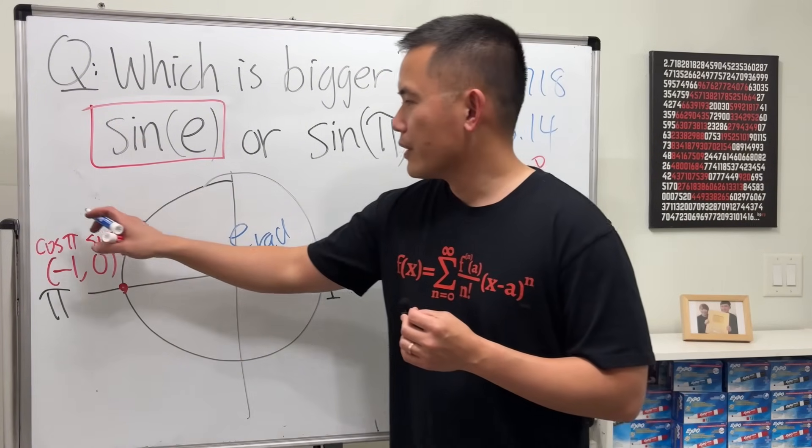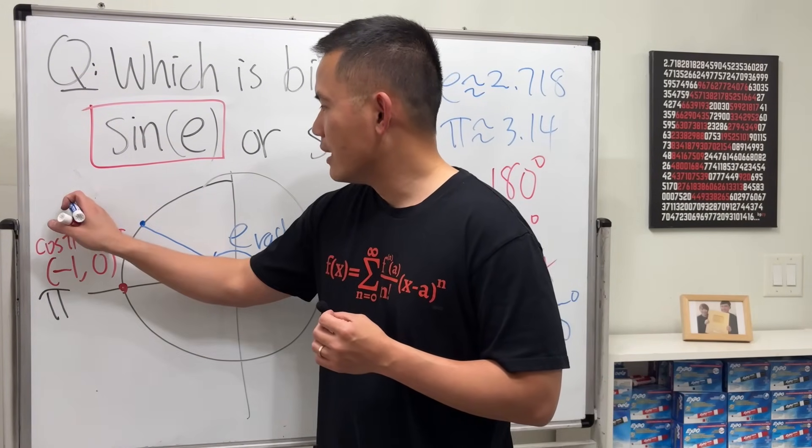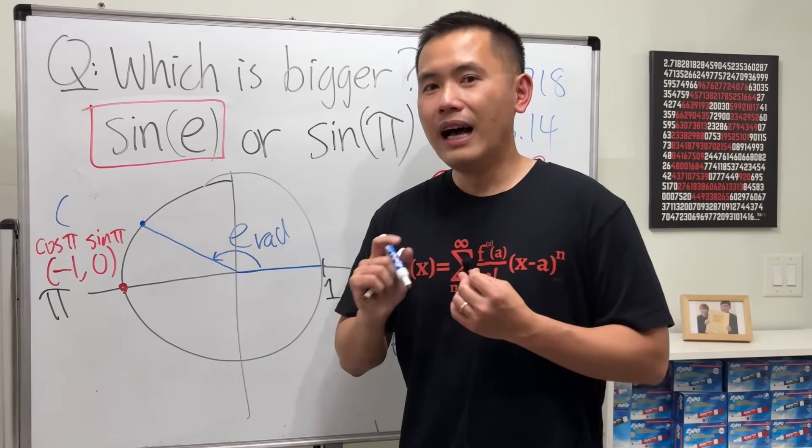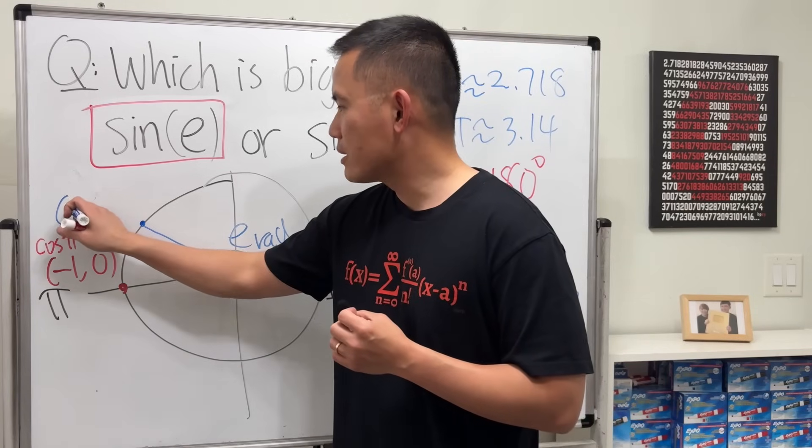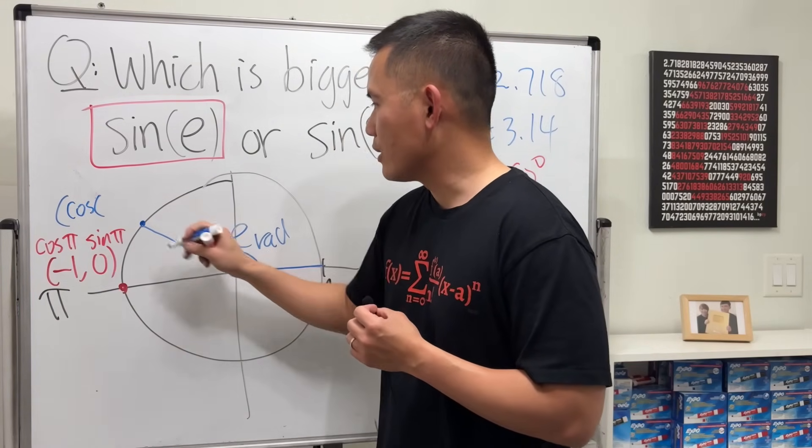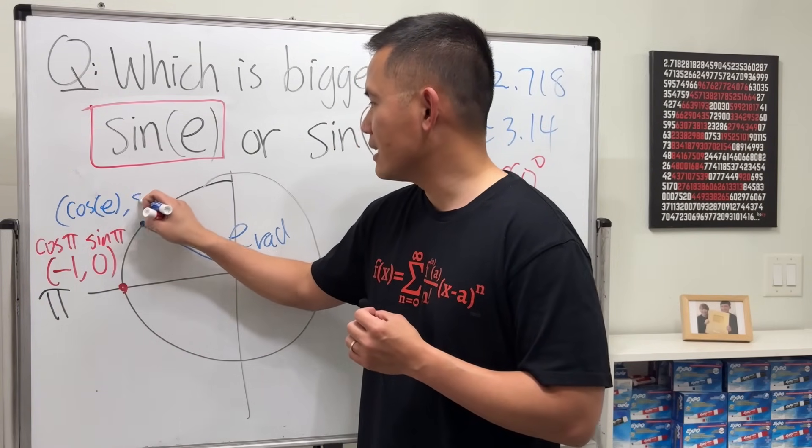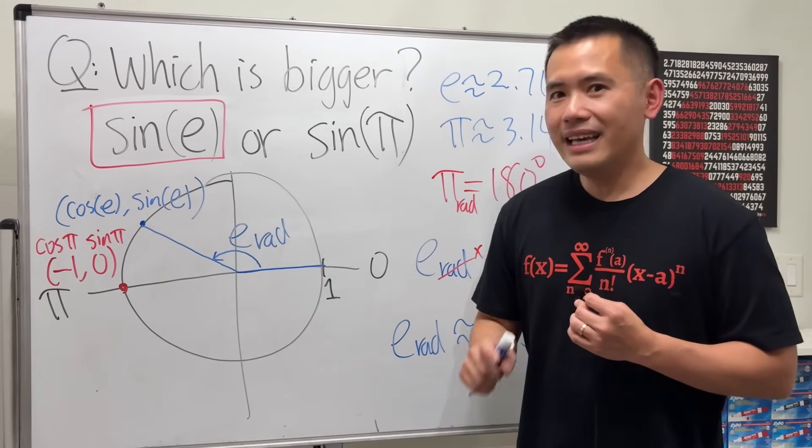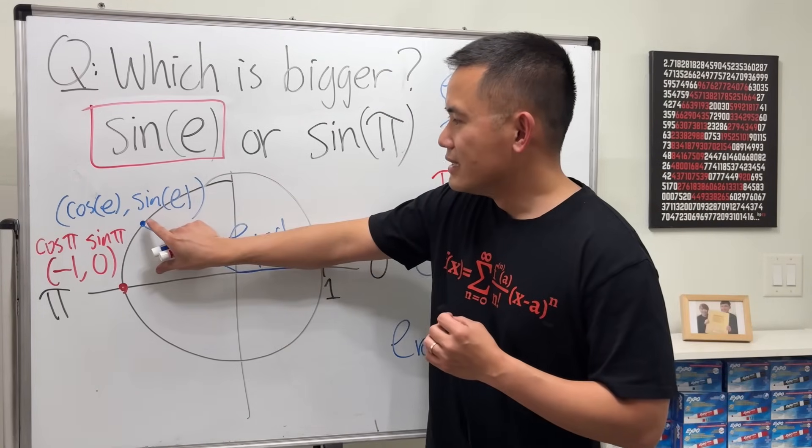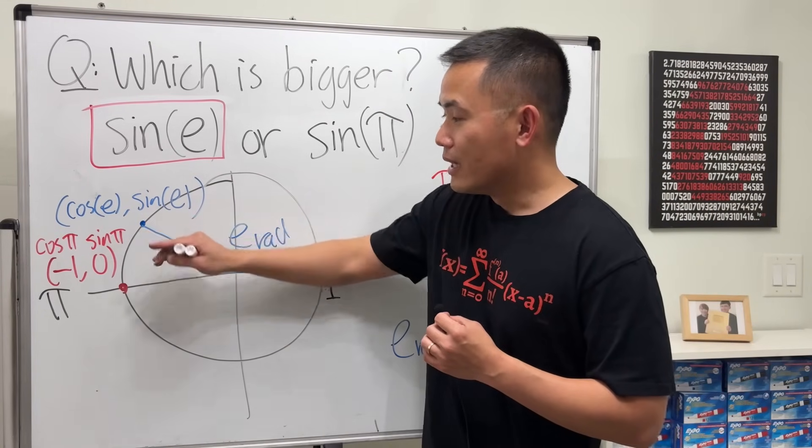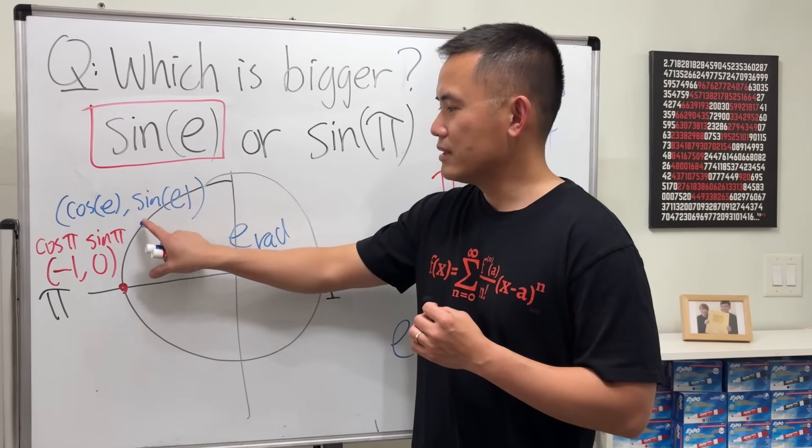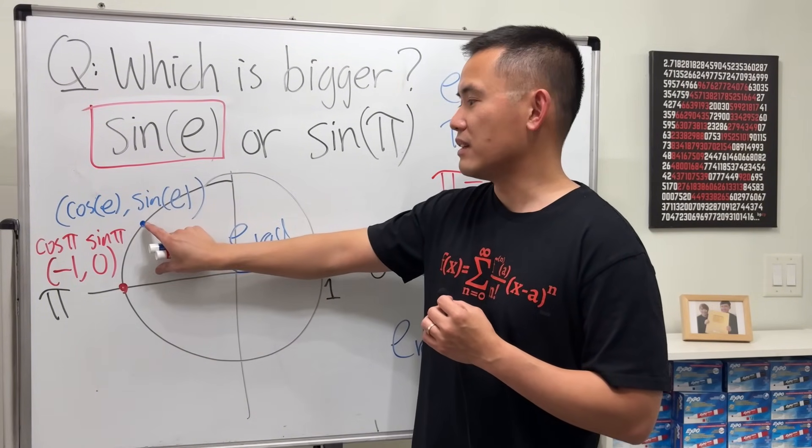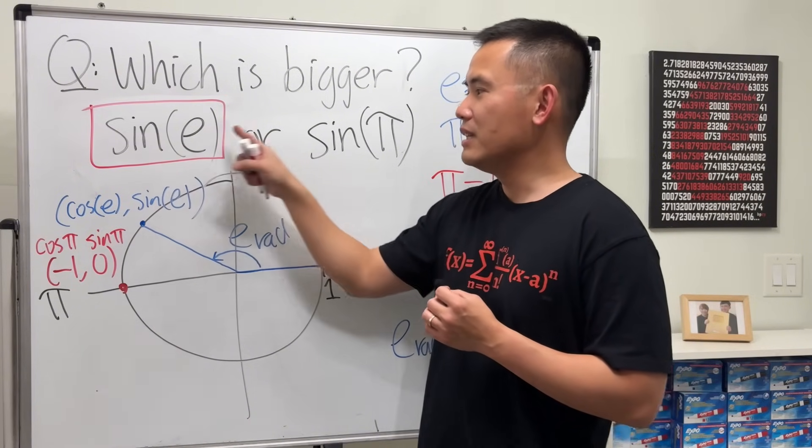Anyways, right here this coordinate, I have no idea what it is. I can only tell you it will be cosine of this angle, which is e, comma sine of e. And as you can see, sine e is higher than sine π because it has a higher y-value. It's positive at least. So this right here is bigger than that.